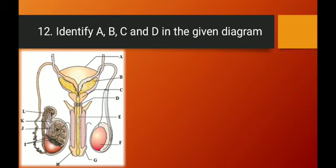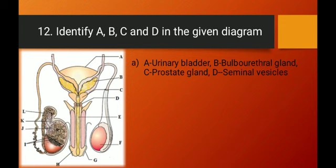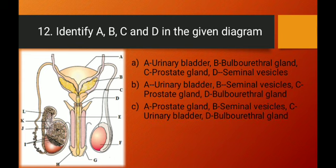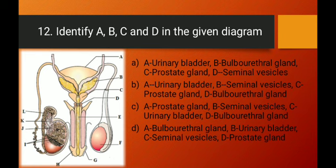Question number twelve: identify A, B, C, and D in the diagram of the male reproductive system. Labeling A represents the urinary bladder — correct in option A, but B is labeled as bulbourethral gland, which is wrong (it should be seminal vesicle). Option B correctly gives: A — urinary bladder, B — seminal vesicle, C — prostate gland, D — bulbourethral gland. Option B is the right answer.